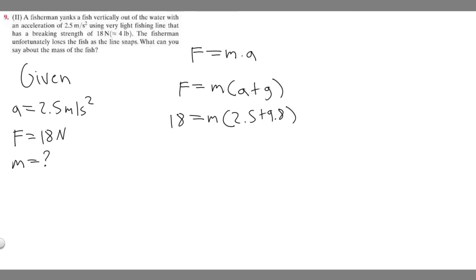If you go ahead and do this, if we divide both sides by this, so 2.5 plus 9.8, we can solve for the mass. Mass is going to be equal to 18 divided by 2.5 plus 9.8. If you do that, you should get 1.5. Keep in mind, when you measure mass with this formula and these units, it's going to be in kg.